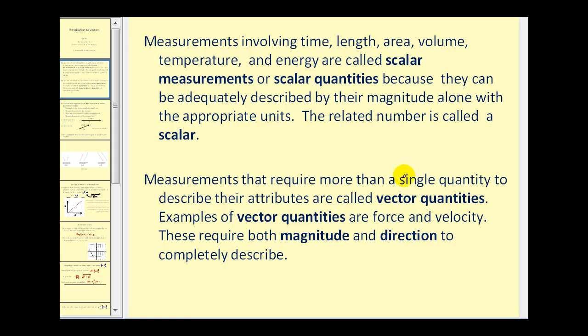Other measurements that require more than a single quantity to describe their attributes are called vector quantities. Examples of vector quantities are force and velocity. These require both magnitude and direction to completely describe.